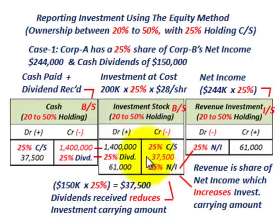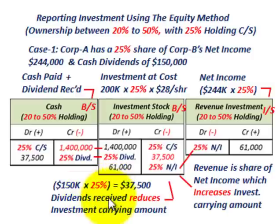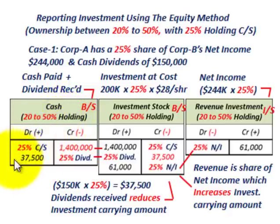Any cash dividends received reduces the investment stock account — the equity account. Total cash dividends paid by Corporation B were $150,000. Corp A has a 25 percent interest, so they received $37,500 in dividends. You credit or reduce your investment account by $37,500, and debit or increase your cash account by $37,500. Dividends received reduces your investment account — that's the key.